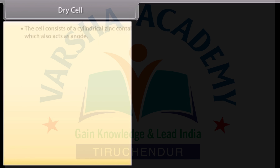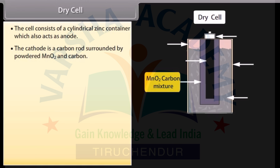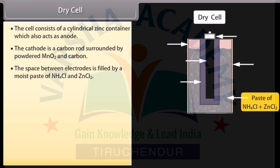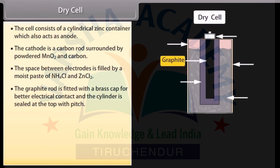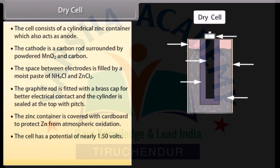Dry cell. The cell consists of a cylindrical zinc container which also acts as anode. The cathode is a carbon rod surrounded by powdered MnO₂ and carbon. The space between electrodes is filled by a moist paste of NH₄Cl and ZnCl₂. The graphite rod is fitted with a brass cap and the cylinder is sealed at the top with pitch. The zinc container is covered with cardboard to protect it from atmospheric oxidation. The cell has a potential of nearly 1.50 volts and finds extensive use in torches, transistors, radios, clocks, etc.